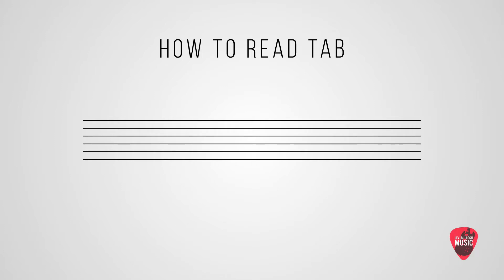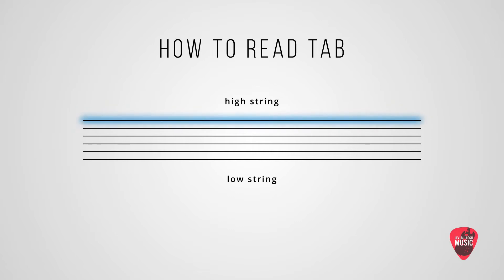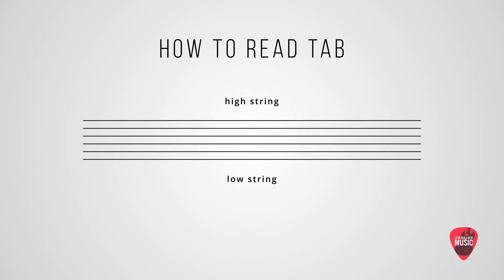These lines represent your strings on the guitar. Your lowest string in sound, in pitch, is going to be on the lowest line on the tab. And your highest string is going to be on the top. So basically, you've got your low strings on the bottom and you've got your high strings on the top.